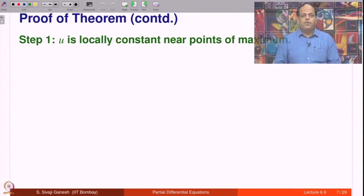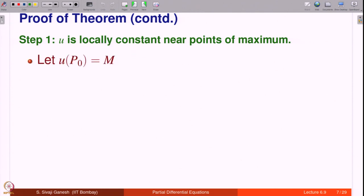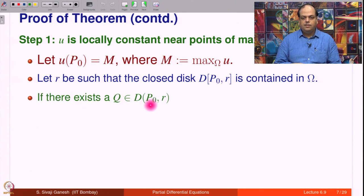Let us move to step 1. We are going to show that u is locally constant near points of maximum. Take any point of maximum — there is a disk around that point on which u is constant. Let u(p₀) = M, where M is the maximum of u over omega. Let r be such that the closed disk D[p₀, r] is contained in omega. If there is a point q in this disk D(p₀, r) where u is not M, then since M is the maximum, u will be strictly less than M at q.